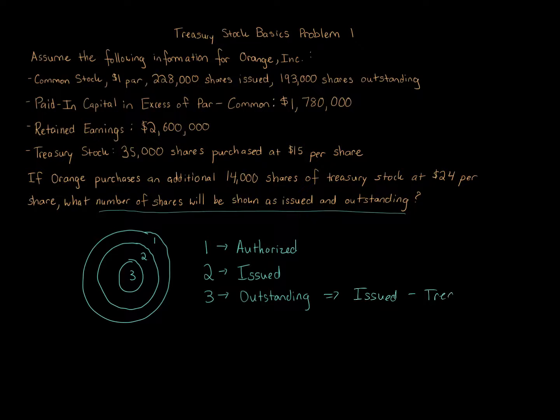Issued minus treasury. You might recall treasury stock is when the corporation buys back its own shares of stock, so treasury is really important here. We're told if Orange purchases an additional 14,000 shares of treasury stock in addition to the 35,000 already. That's going to increase the number of treasury stock, which means issued minus that increased treasury stock affects outstanding. That's what this question is all about.